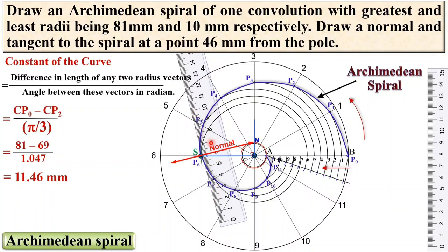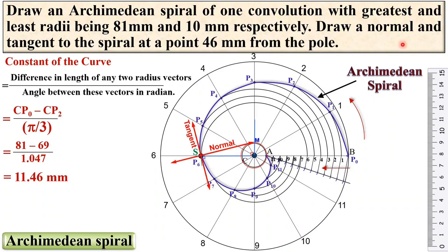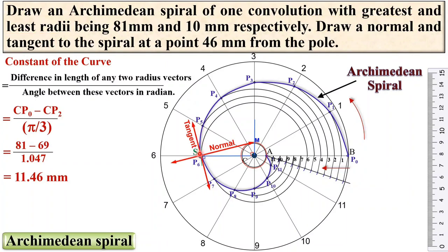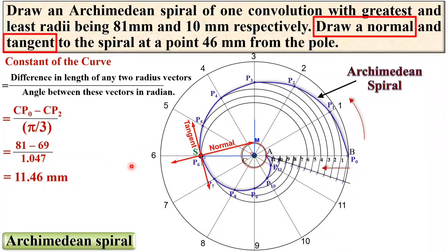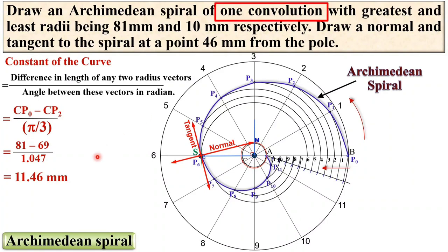Perpendicular to this normal will give you the tangent. With the help of the scale, just coincide this long line on the scale with the normal, and it will automatically give you the perpendicular line — that is the tangent. So this completes the second objective: drawing the normal and tangent to the spiral at a point 46 mm from the pole. This is a really simple problem. Can you draw the same problem if I change the convolution from 1 to 1 and a half? Write your answer in the comment box. Thanks for watching — please press the like button.